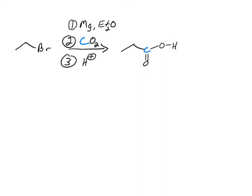In this video we're going to talk about how to take an alkyl halide, something that's an electrophile with a carbon with a delta plus and a bromine, and turn it into a carboxylic acid using CO2.